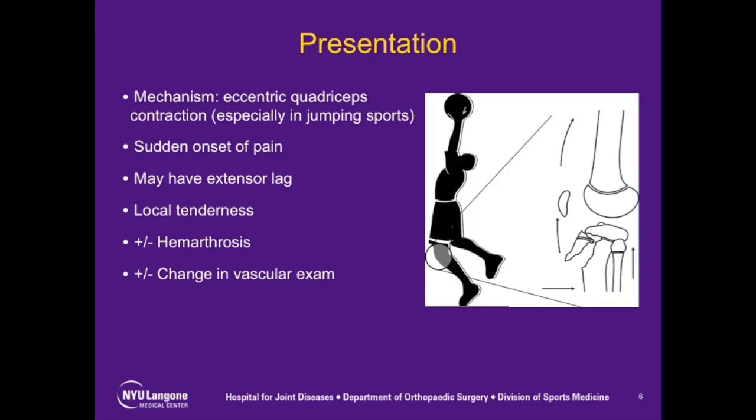When tibial tubercle avulsion fractures occur, they lead to the sudden onset of significant pain and an inability to bear weight on the affected side. A large hemarthrosis often develops quickly following injury. Upon presentation, the patient is tender to direct palpation anteriorly and will either be unable to straight leg raise or will have a significant extensor lag present. The examining physician needs to perform a careful vascular exam and assess the patient's lower leg compartments, as an injury to the recurrent anterior tibial artery may be present, which can lead to compartment syndrome.